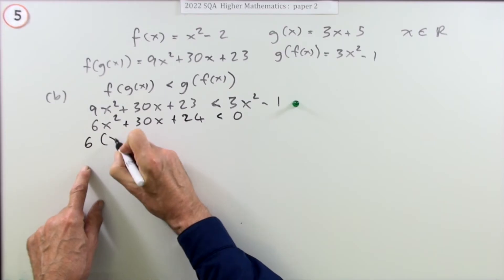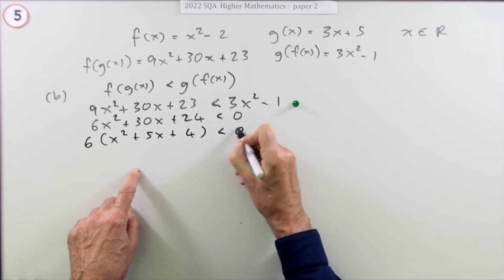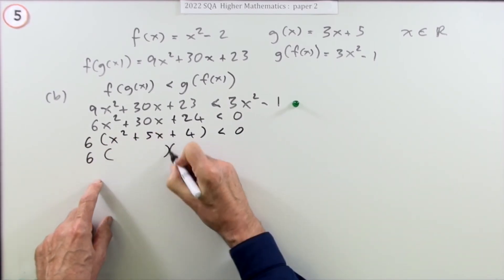Factor out 6 as a common factor, leaving x squared plus 5x plus 4. That factorizes quite nicely.